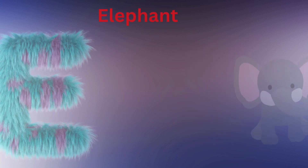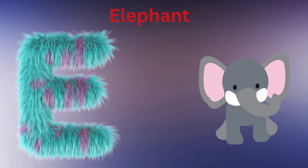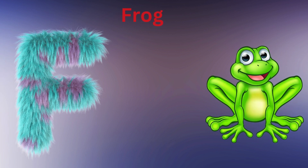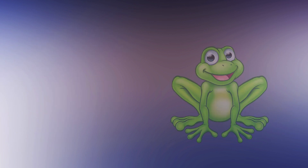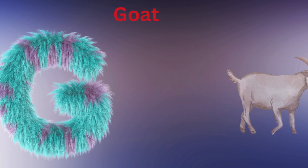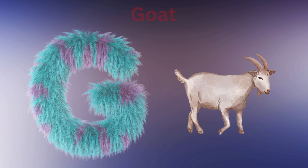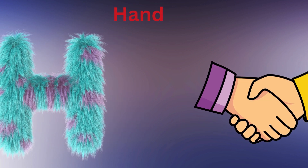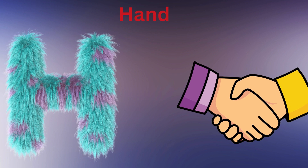E is for Elephant, E-E-Elephant. F is for Fish, F-F-Fish. G is for Godzilla, G-G-Godzilla. H is for Horse, H-H-Horse.